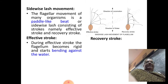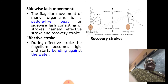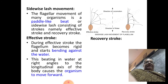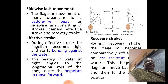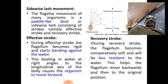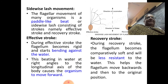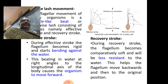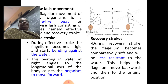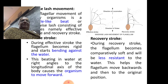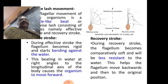This sidewise lash consists of two types of strokes: effective stroke and recovery stroke. During the effective stroke, the flagellum becomes rigid and starts bending against water. This beating in water at right angles to the longitudinal axis of the body causes the organism to move forward. During the recovery stroke, the flagellum becomes comparatively soft and will be less resistant to the water. This helps the flagellum move backwards and then return to its original place, so the stroke is recovered through the recovery stroke.